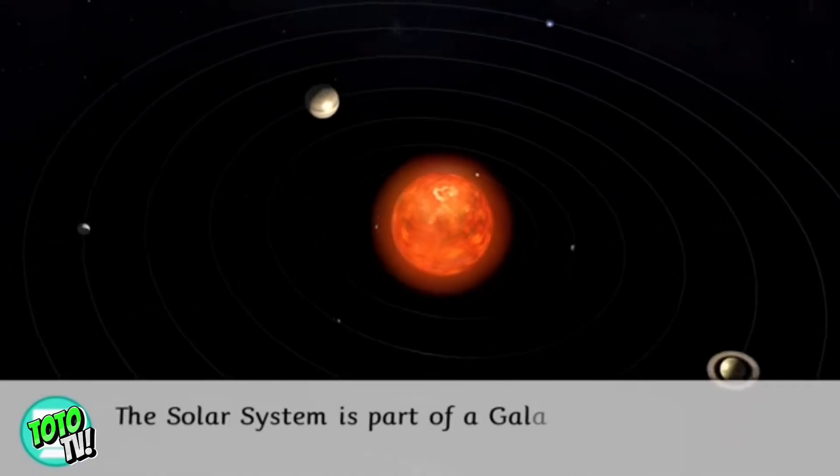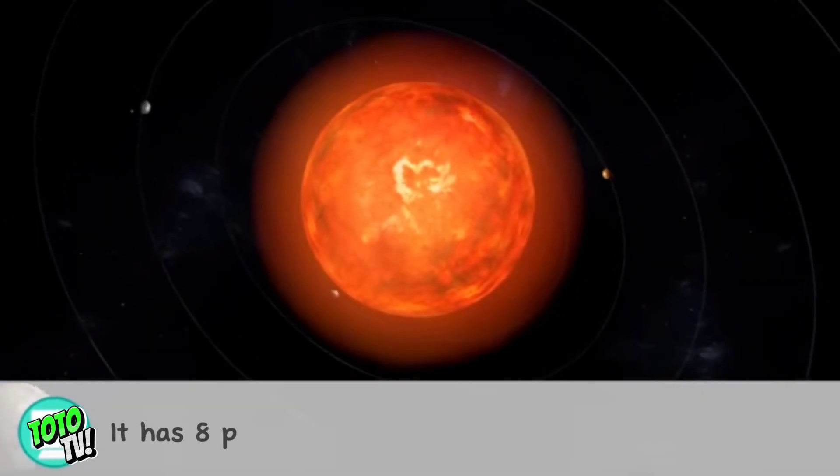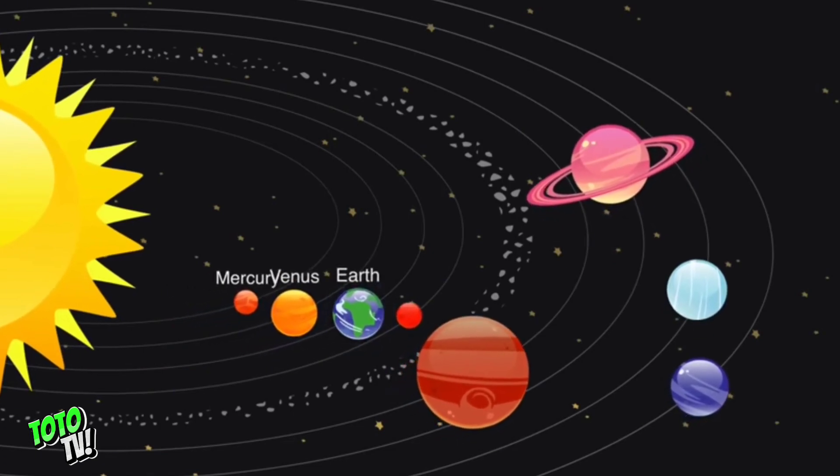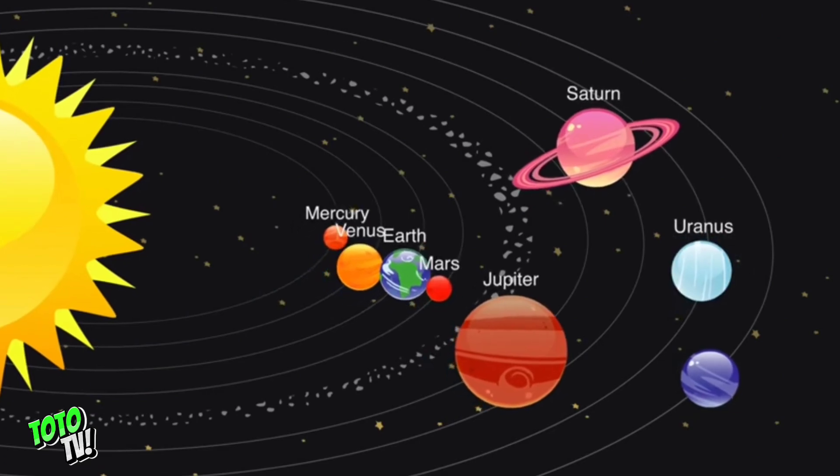The solar system is part of a galaxy called the Milky Way. It has eight planets. These are Mercury, Venus, Earth, Mars, Jupiter, Saturn, Uranus, Neptune.